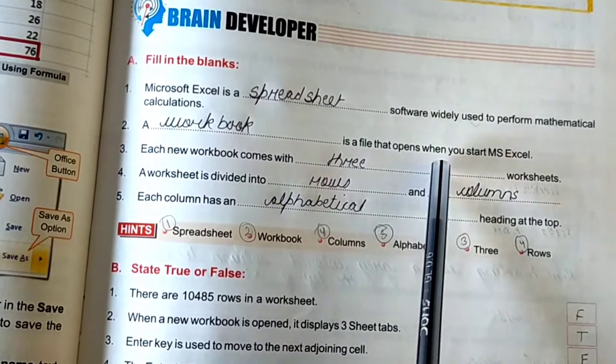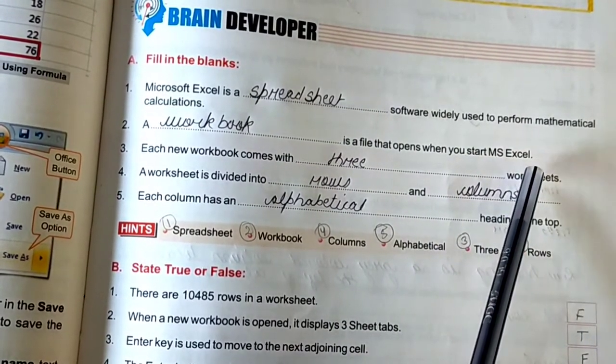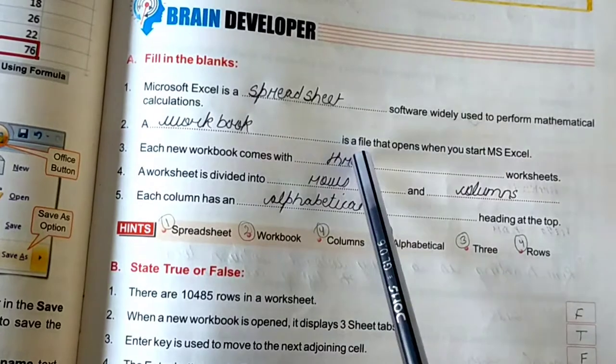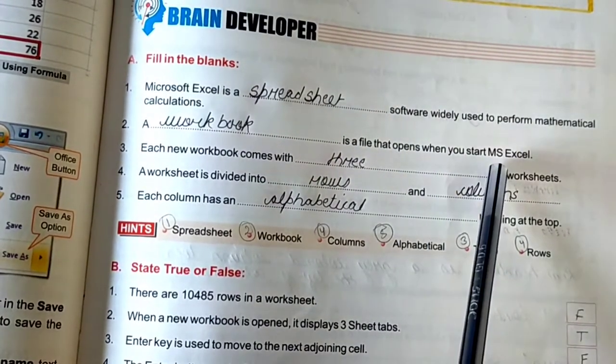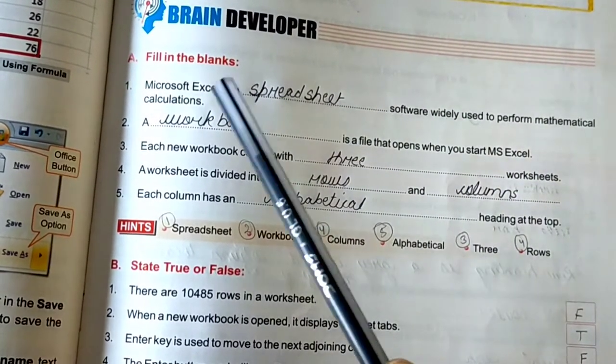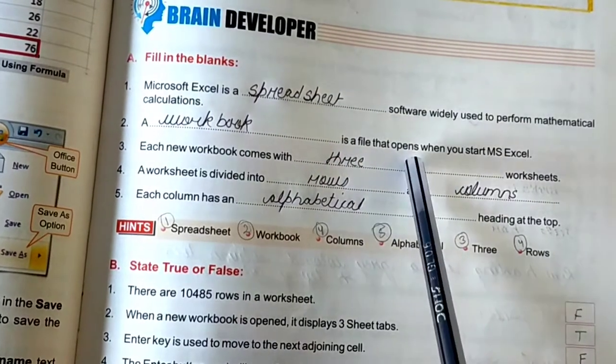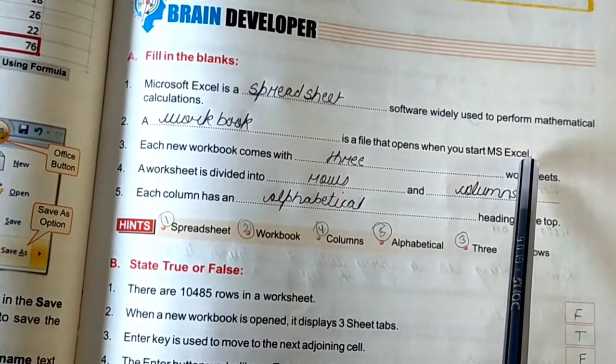Second, a blank is a file that opens when you start MS Excel. A workbook is a file that opens when you start MS Excel.